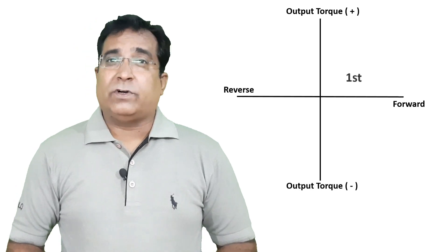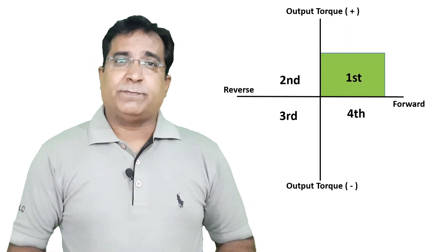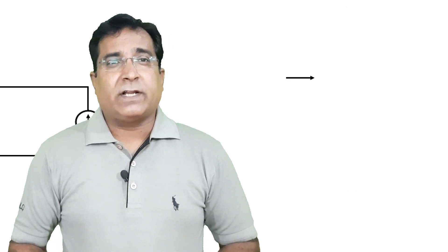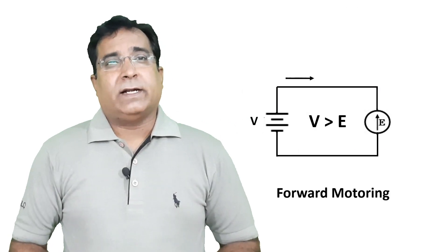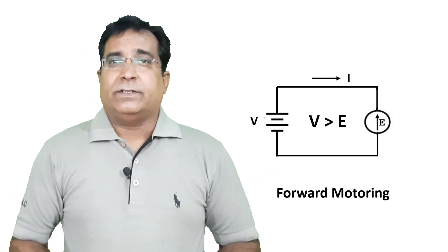So here the forward torque limit in VFD has to be set in terms of percentage of rated torque as per load requirement. The default can be 200%. It can also be understood by electrical circuit. Here the power supply V pumps current I into motor E. Result: you get a forward motion and positive torque.